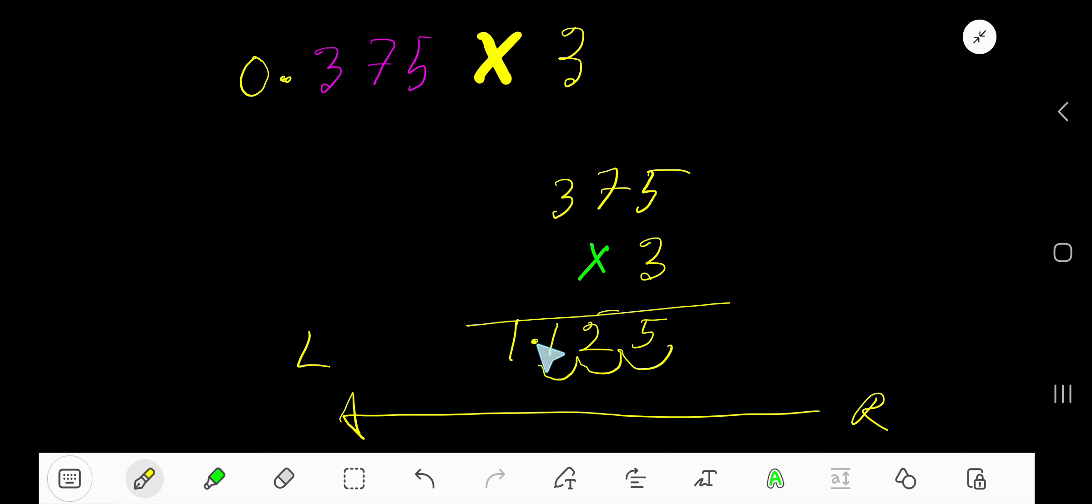You need to place the decimal from right to left, 3 decimal places. This is 1.125, which is your answer. Now you can place your decimal according to the original 0.375.